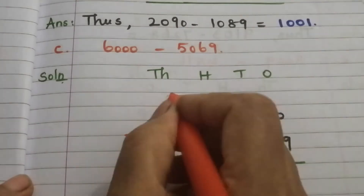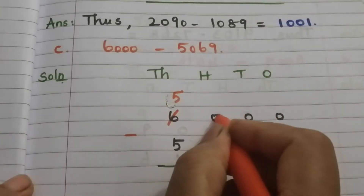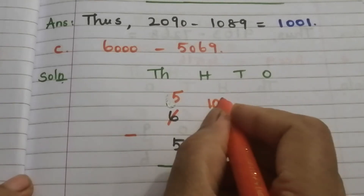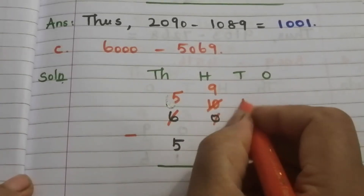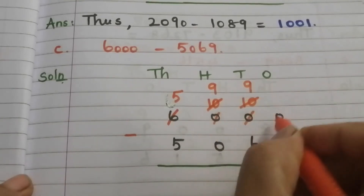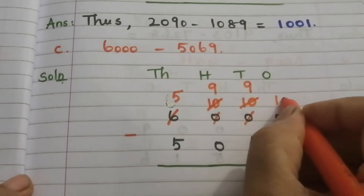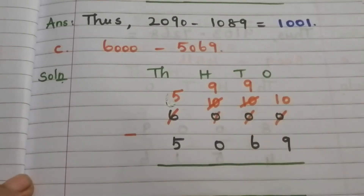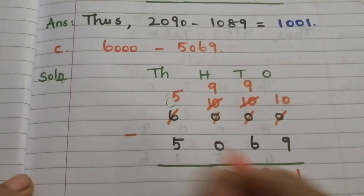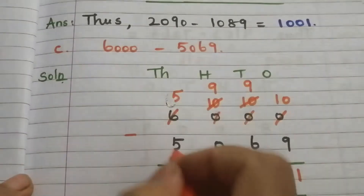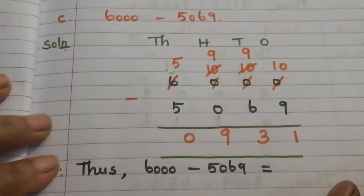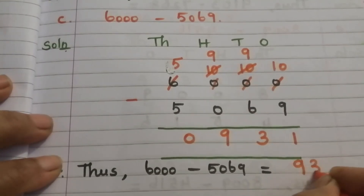6 becomes 5 and this 0 becomes 10. We borrow from this 10 — it becomes 9 and this 0 becomes 10. We borrow from this 10 — it becomes 9 and this 0 becomes 10. 10 minus 9 is 1, 9 minus 6 is 3, 9 minus 0 is 9, 5 minus 5 is 0. So the answer is 931.